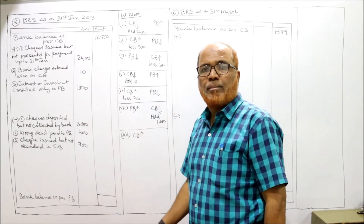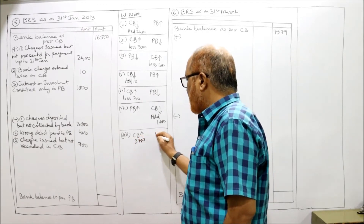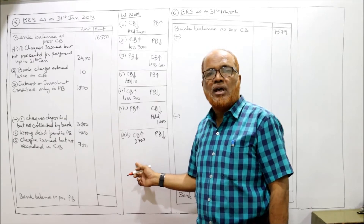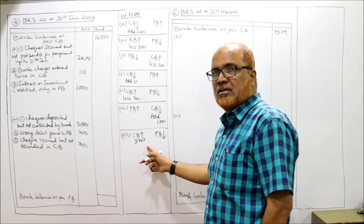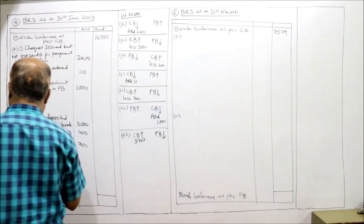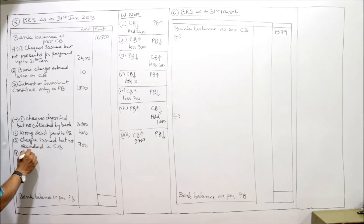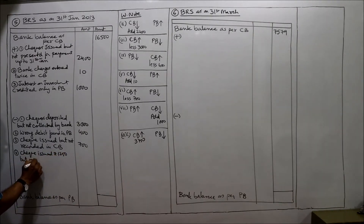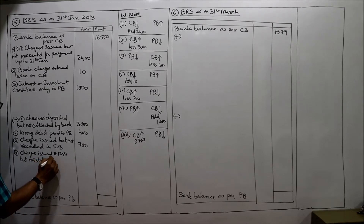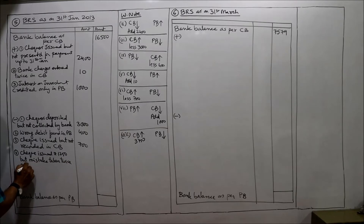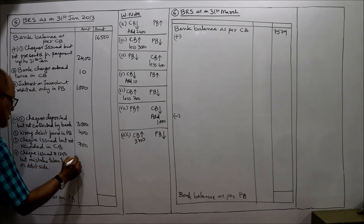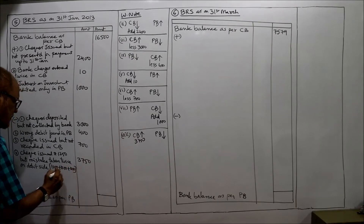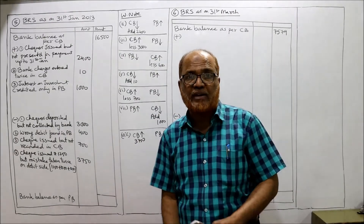The cash book balance is showing more by rupees 3750, whereas the pass book balance is less because the mistake is only in the cash book. Our starting point, the cash book, shows more balance, so we subtract. Less: check of rupees 1250 issued to Khanna — wrongly debited twice instead of credited — total difference 3750.